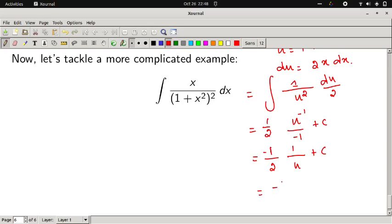This is equal to minus 1 over 2, 1 over u plus c. So minus 1 by 2, u is 1 plus x square. This is our final answer.